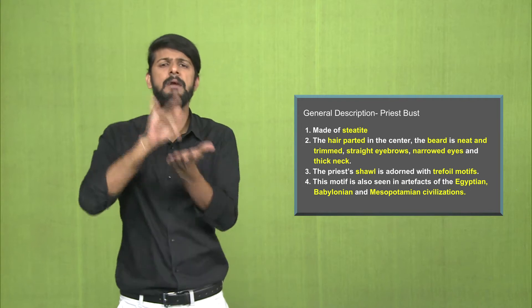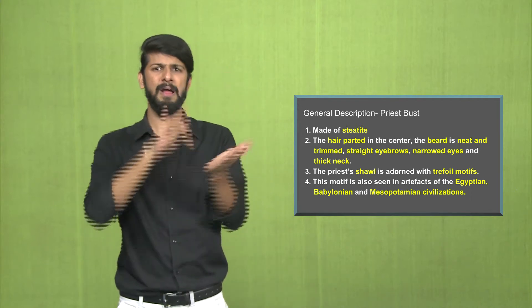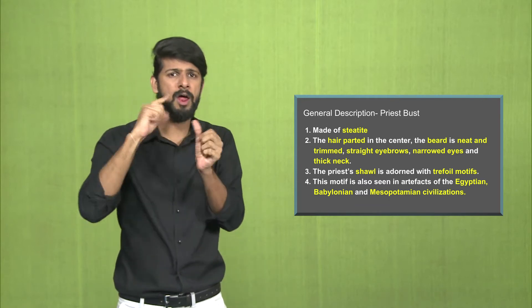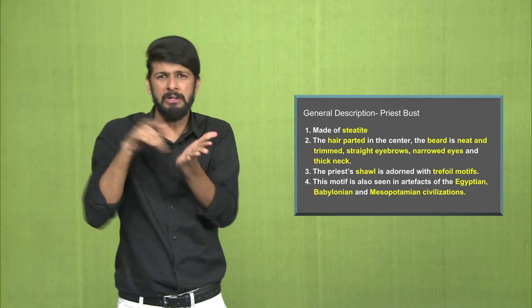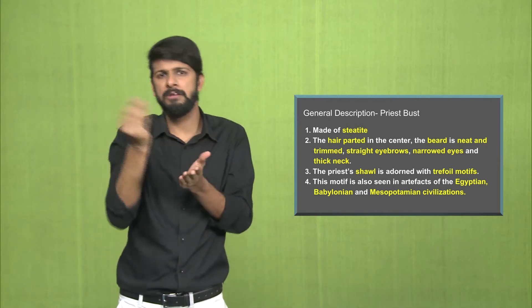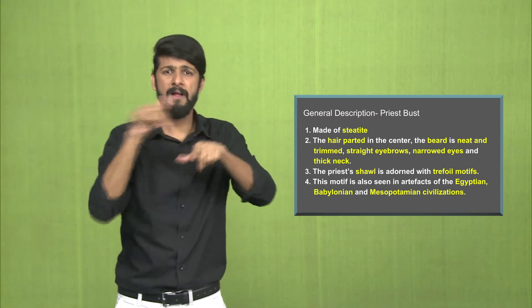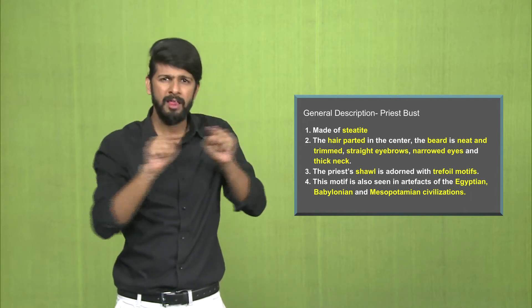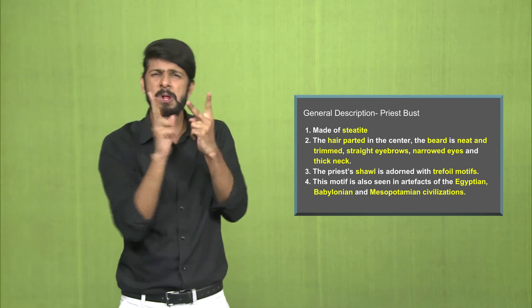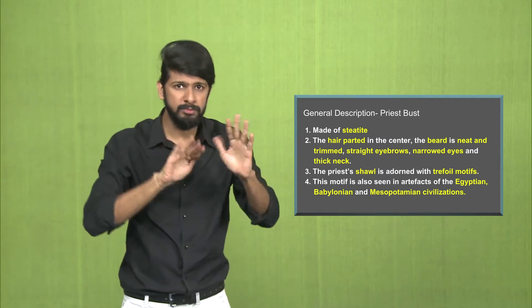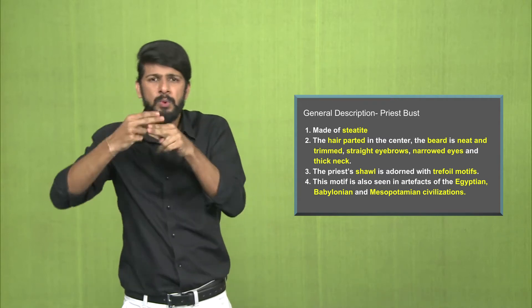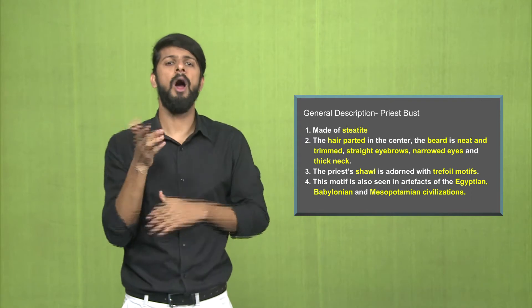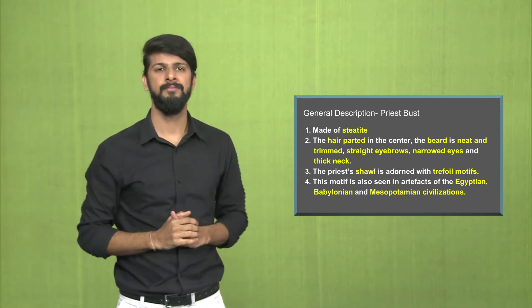The shawl which the priest is wearing is adorned with the trefoil motifs. Also this trefoil motif is seen in artifacts of other civilizations like the Egyptian, Babylonian and Mesopotamian civilizations. In the current countries of Kuwait and Iraq, these early civilizations and the artifacts also had the trefoil motif, meaning people were already designing their clothes.